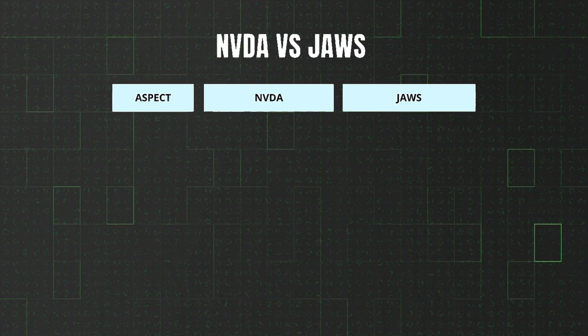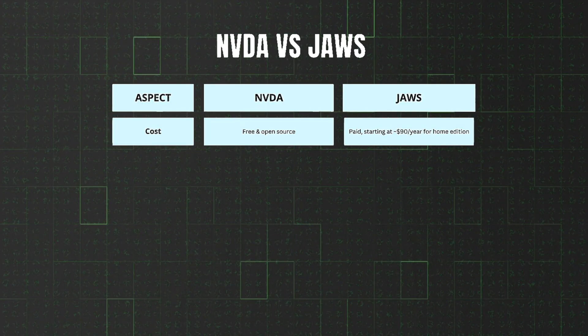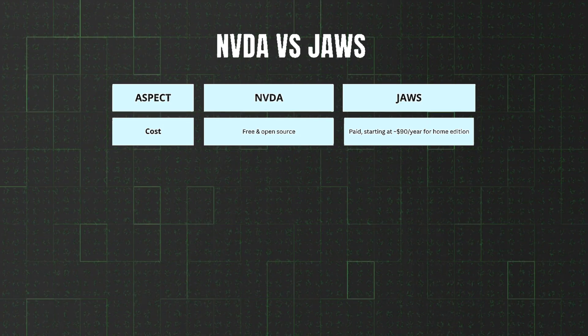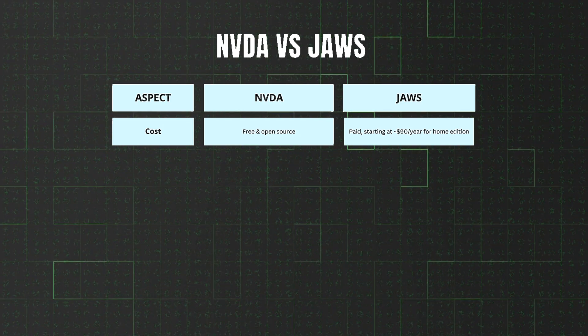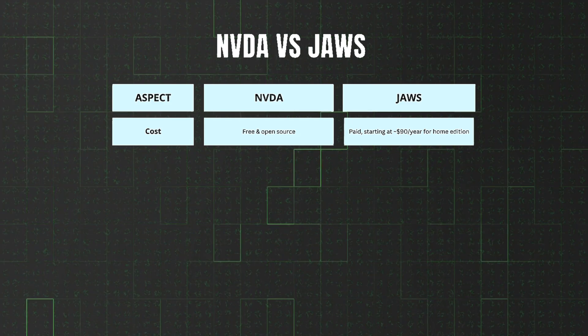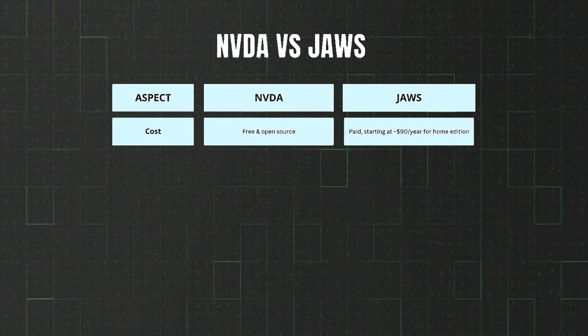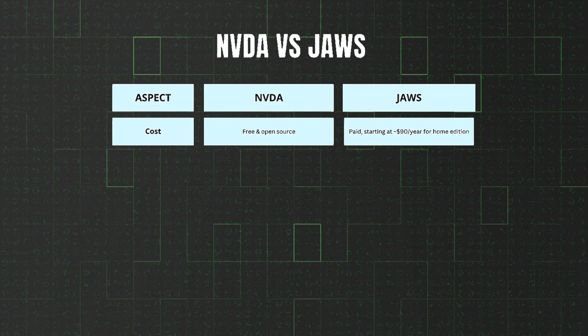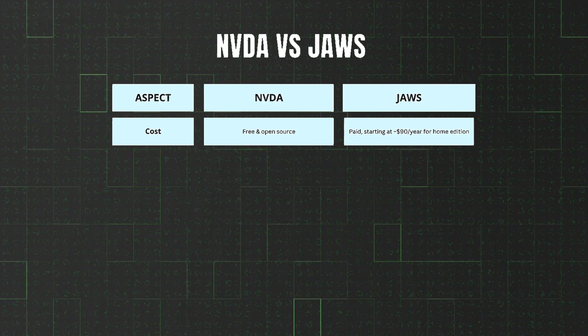NVDA, or Non-Visual Desktop Access, is a free, open-source screen reader that enables visually impaired users to interact with digital content. Developed by NV Access, it's one of the most widely used screen readers globally. NVDA stands out because it's free — and that's difference number one. JAWS is a paid screen reader starting at roughly $90 per year for home editions. They do offer a free version, but you have to restart your machine every 40 minutes.